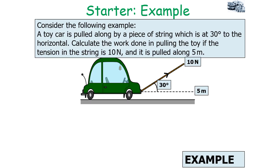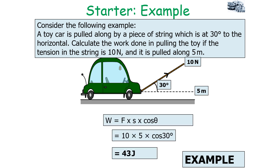A toy car is pulled along by a piece of string at 30 degrees to the horizontal. Calculate the work done if the tension in the string is 10 newtons and it is pulled 5 metres. Using the equation work done equals force times distance times cos θ: it's 10 times 5 times cos 30, which equals 43 joules.